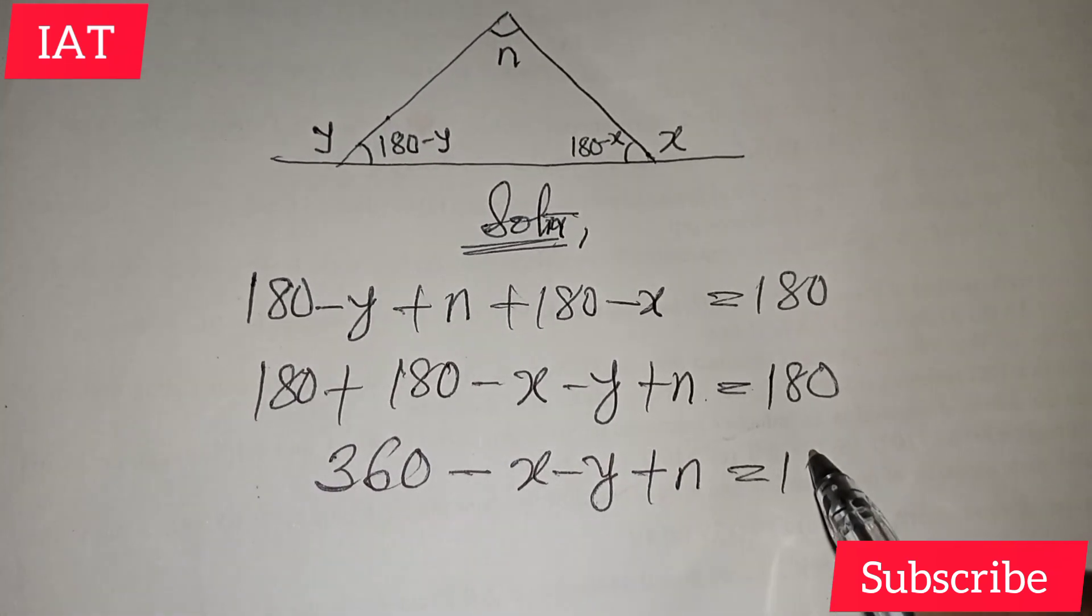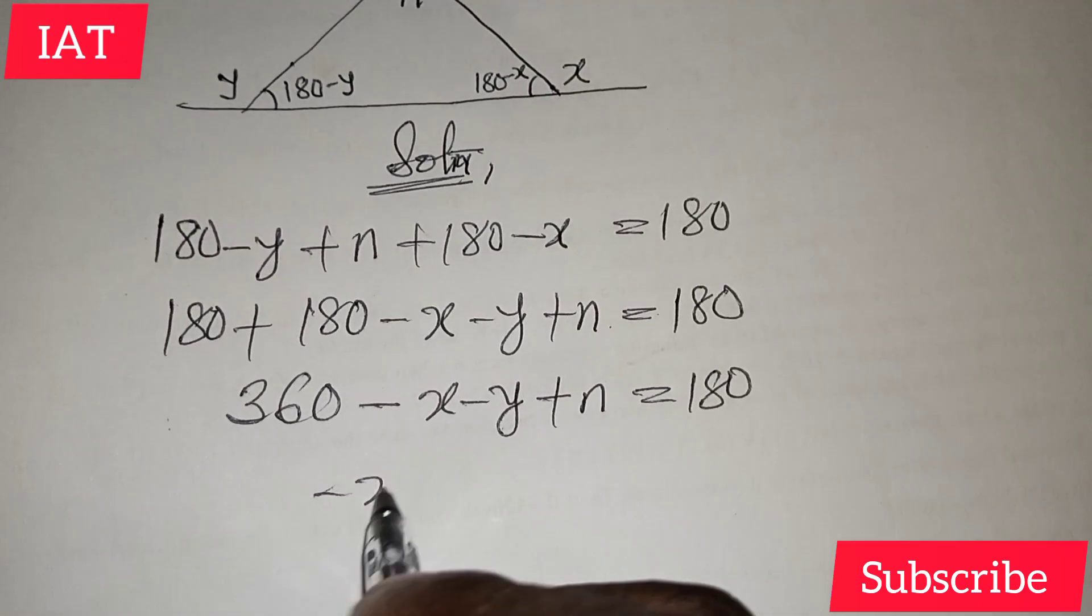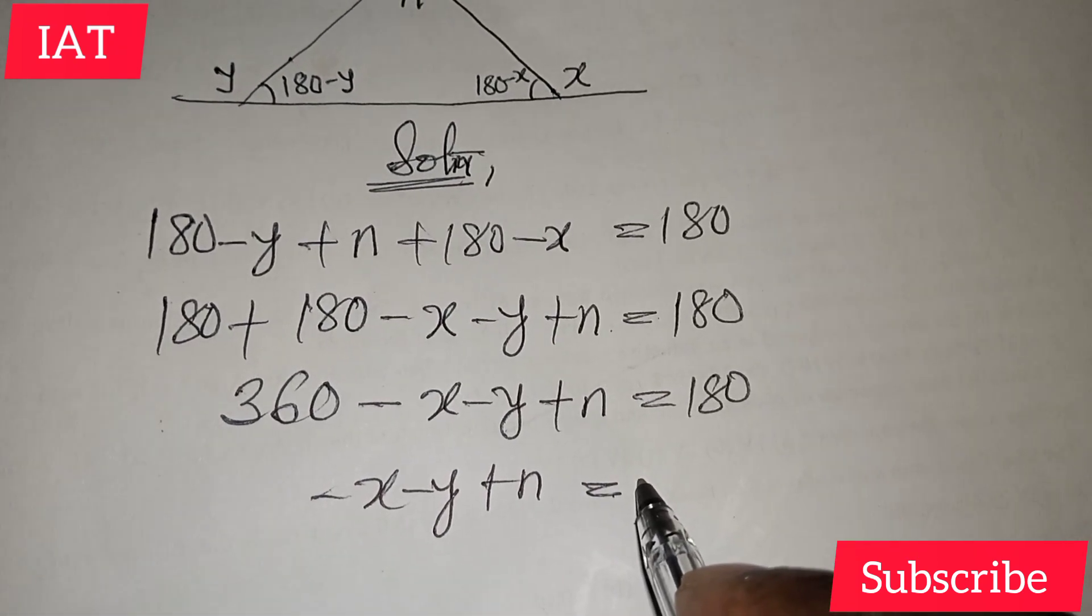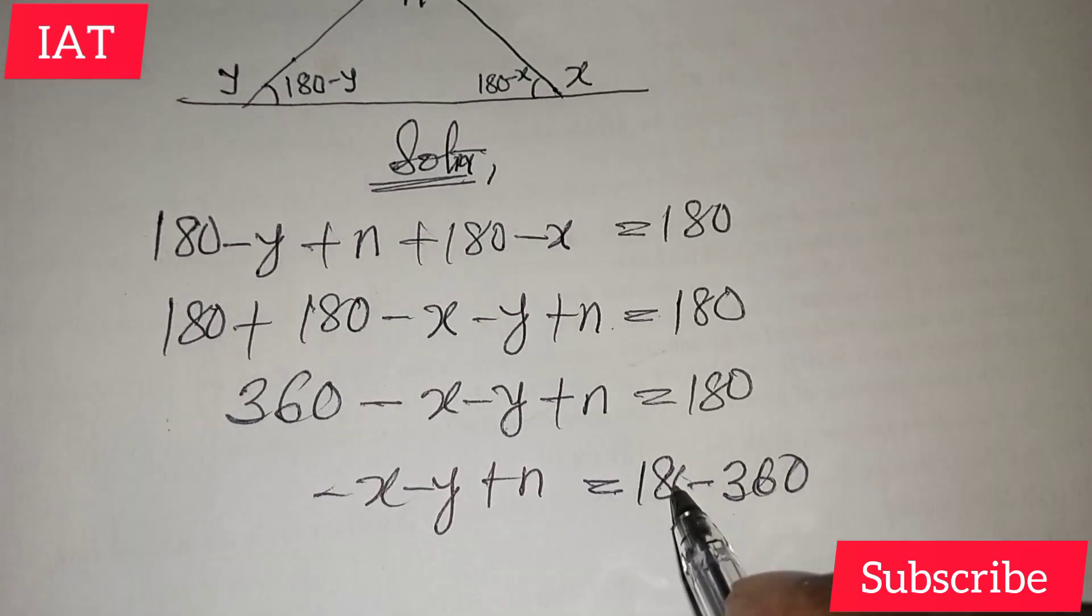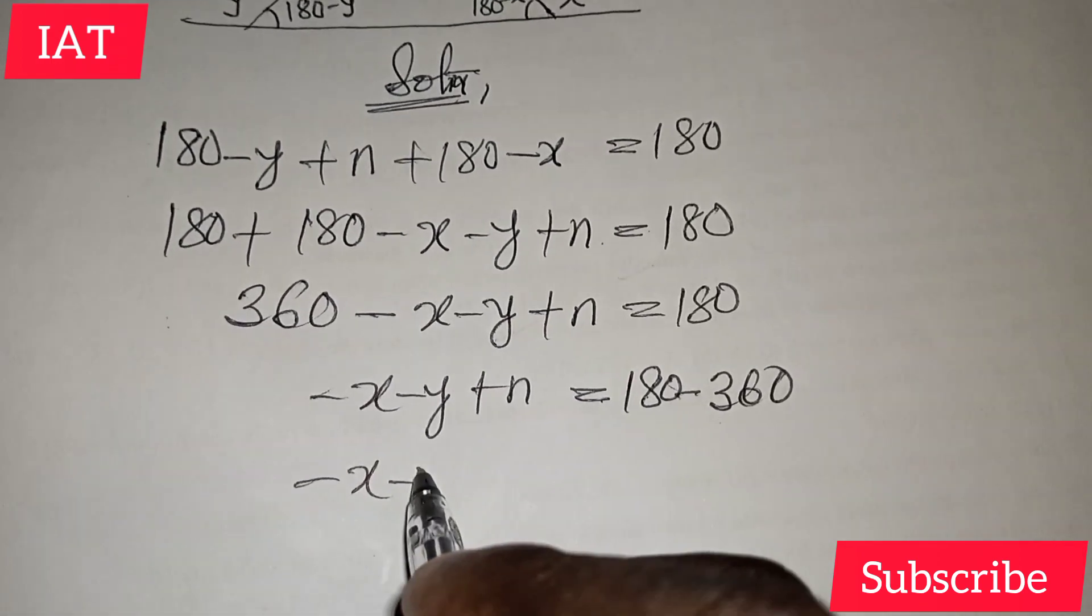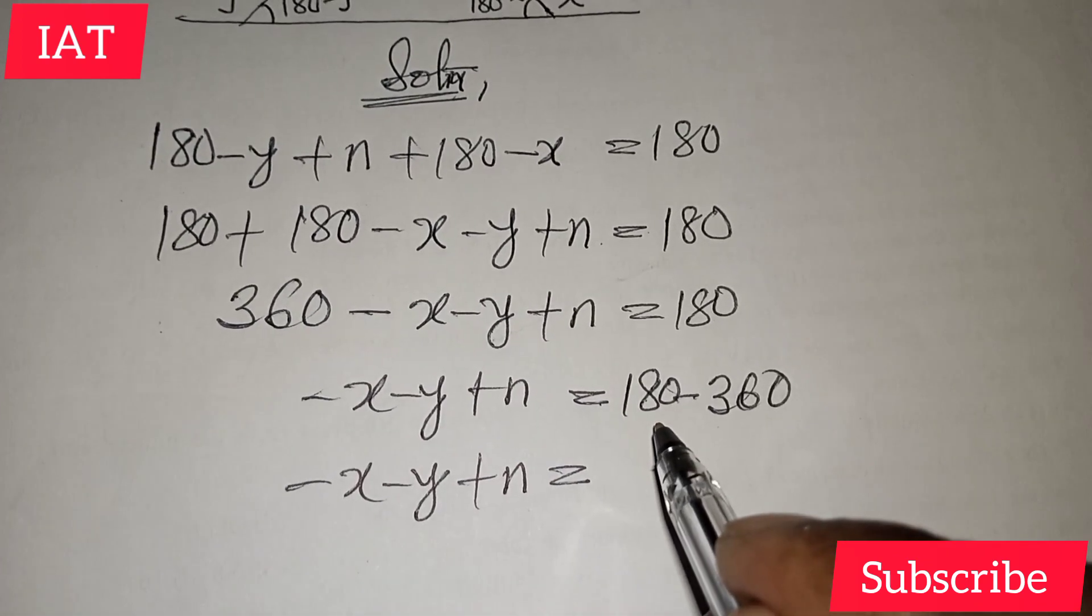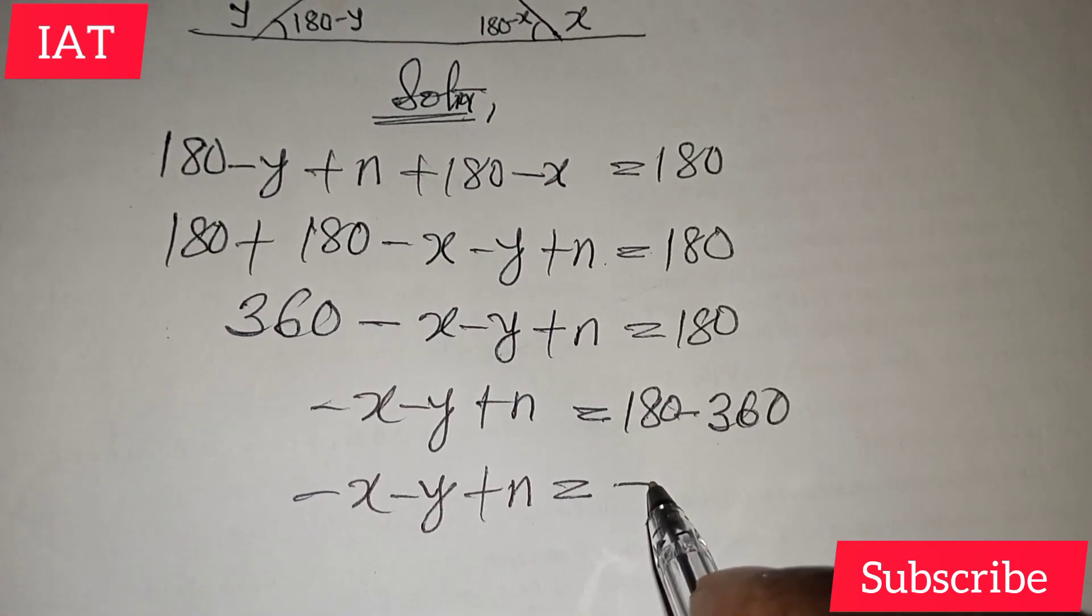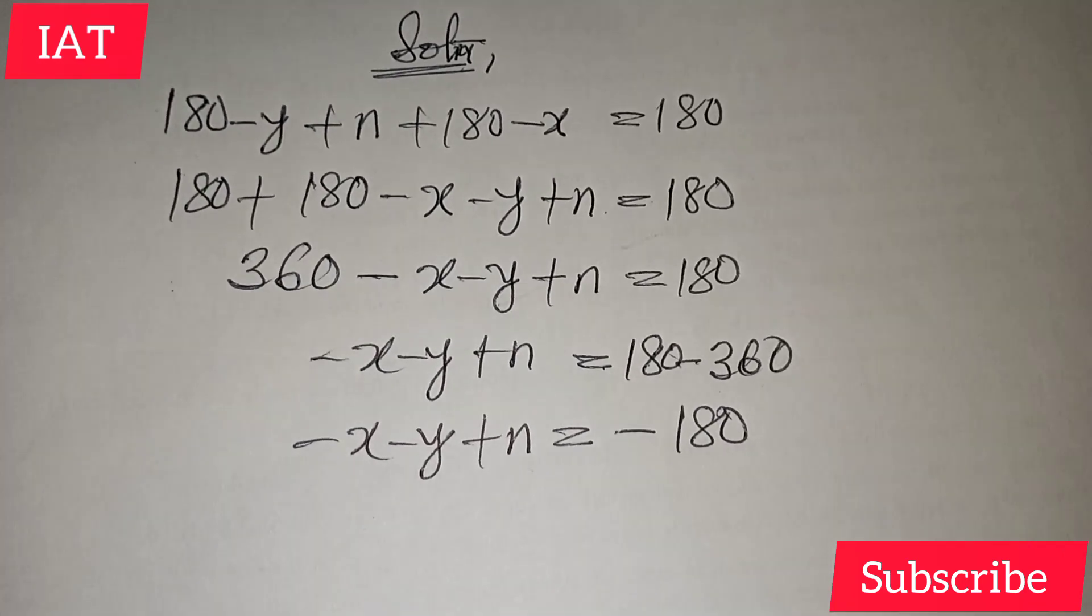Let's take this 360 to the other side so that we have minus x minus y plus n equal to 180 minus 360. If we do that, minus x minus y plus n will give us negative 180 when we subtract.